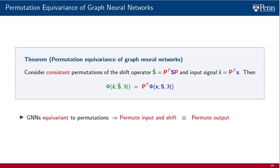This is the same theorem that holds for graph filters but restated for GNNs. Its implication is analogous: running a GNN after we permute the input and the shift is equivalent to first running the GNN and permuting the output afterwards.